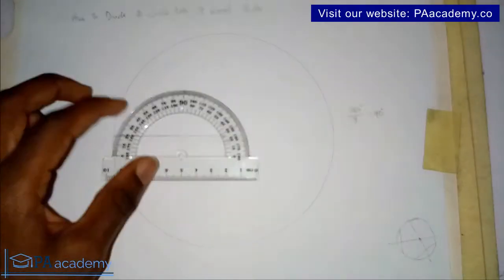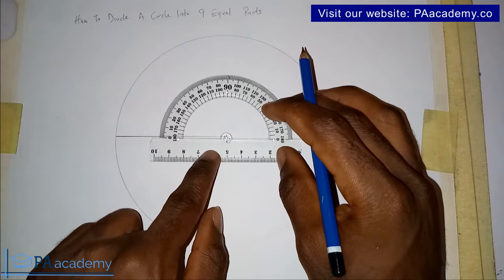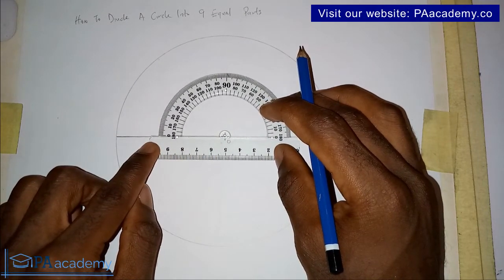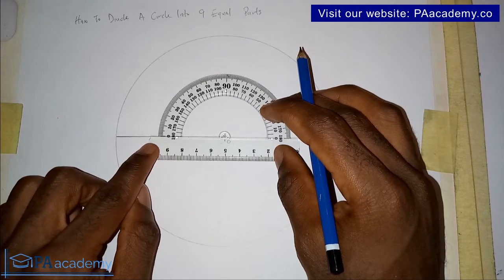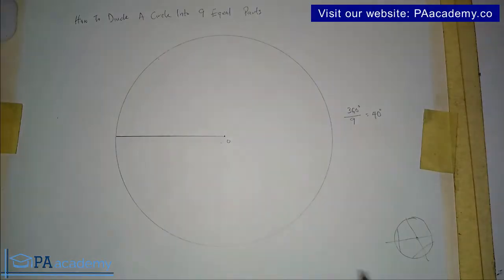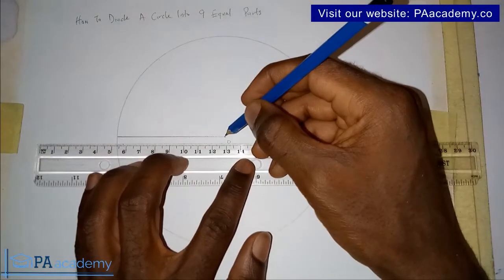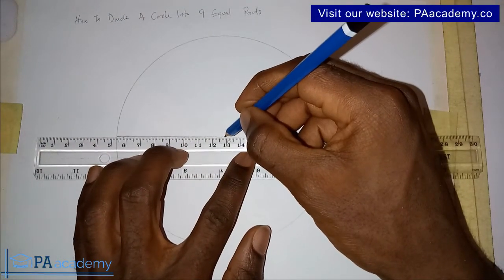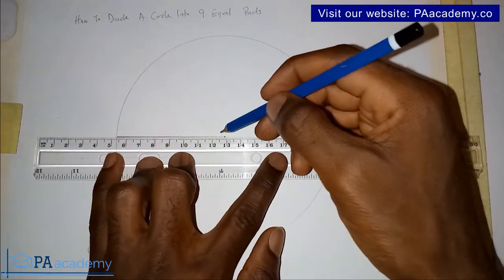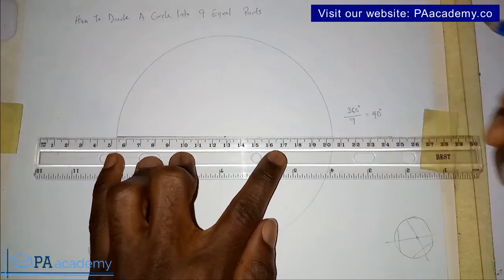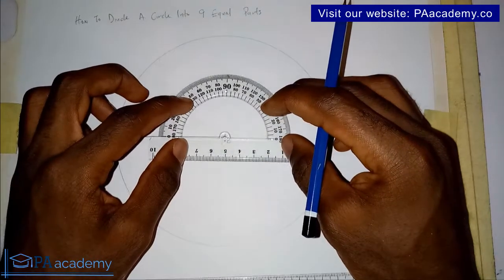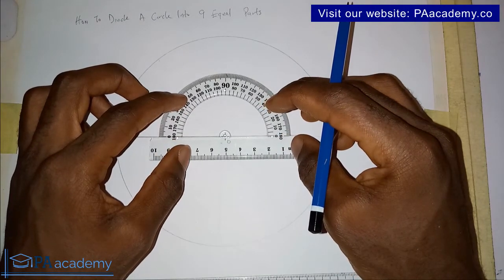After drawing the radius, bring in your protractor and place it at point O — make sure it is properly placed, that's very important. If you are not sure of the placement, you can extend the radius to a full diameter, but make sure the line on the other side is a faint construction line — a thin line — so that it allows you to place your protractor on that line properly.